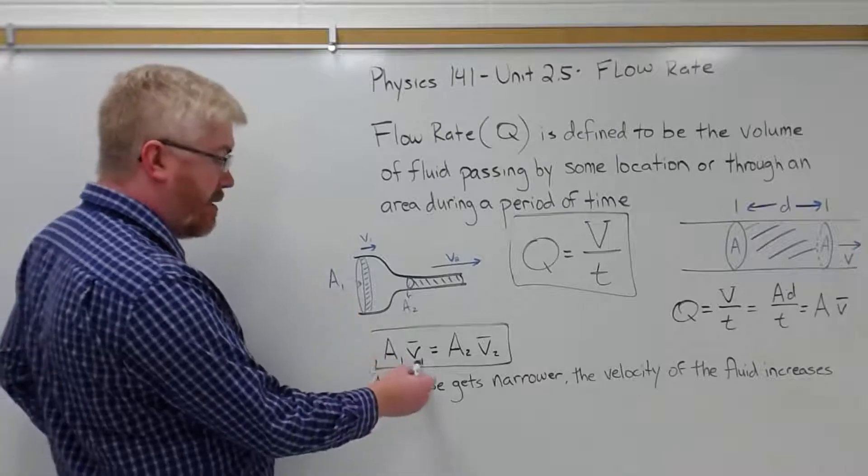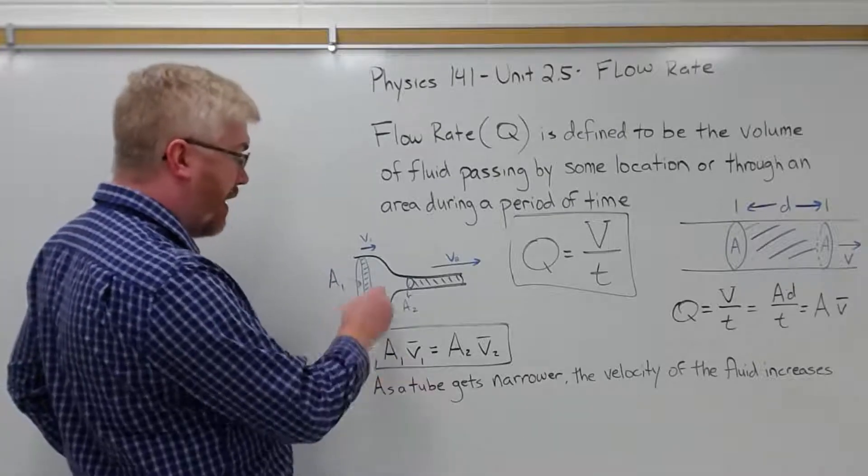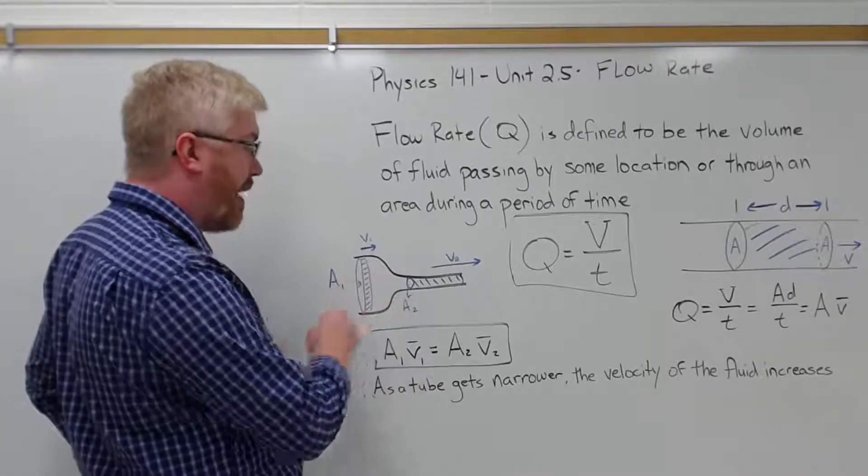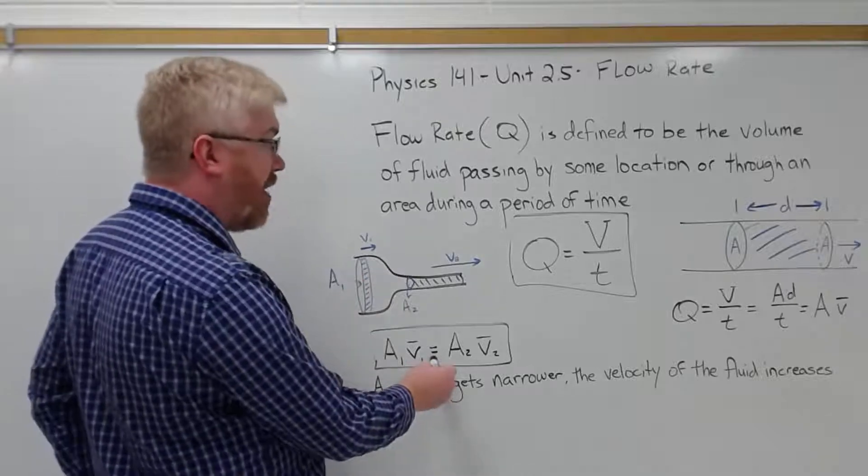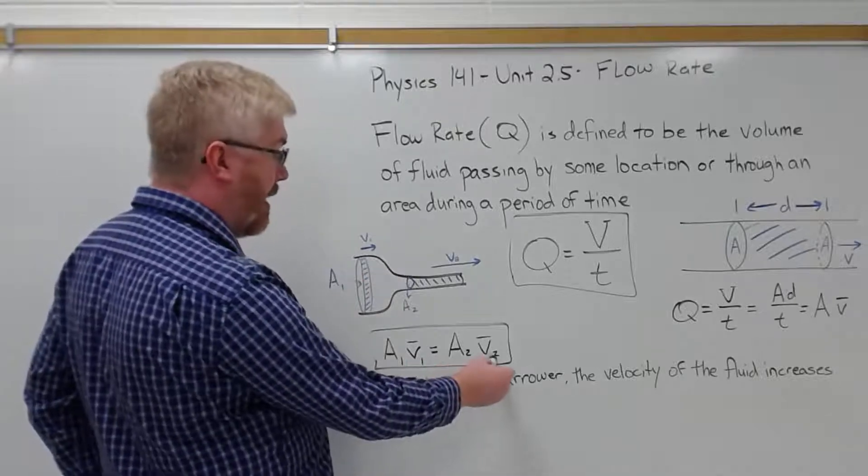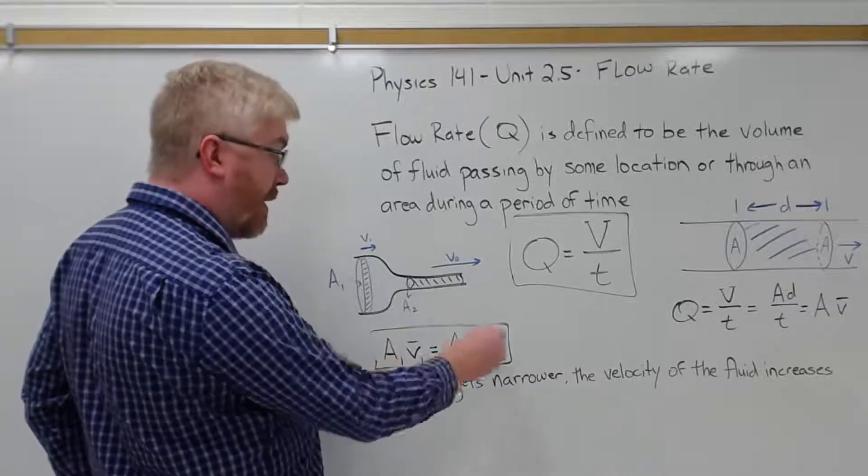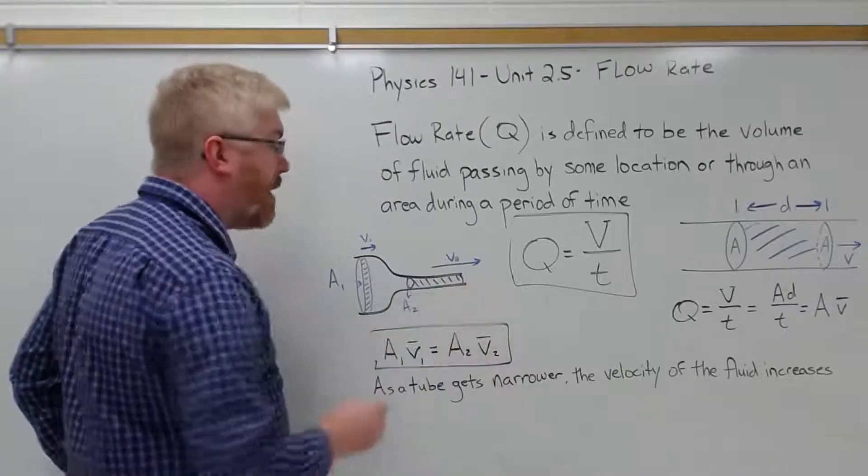So this volume of fluid I have drawn over on the left and the volume of fluid I have drawn on the right is the same volume. The area times the average speed over here in section one, the fat end of the tube, must equal the volume flow rate, or the area times the average speed on the right end of the tube.